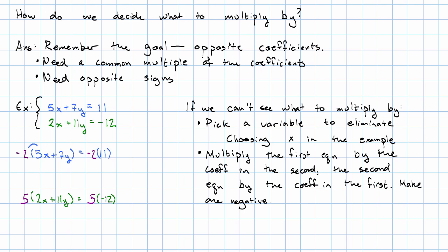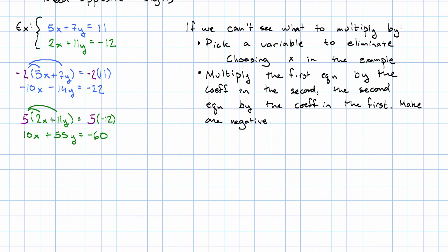First equation, when we distribute, we get negative 10x minus 14y equals negative 22. Second equation, when we distribute, we get positive 10x plus 55y equals negative 60. Notice the numbers are pretty big here. That's to be expected. Our transformed system is now negative 10x plus negative 14y equals negative 22 and positive 10x plus 55y equals negative 60. When we add them together,